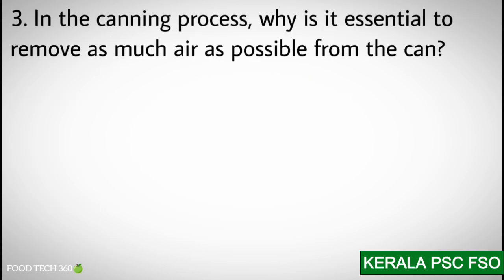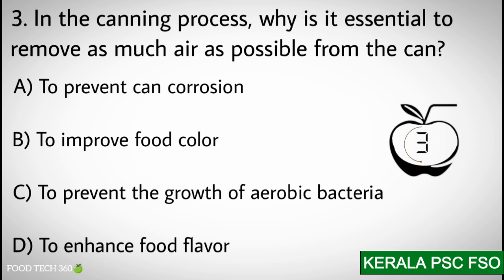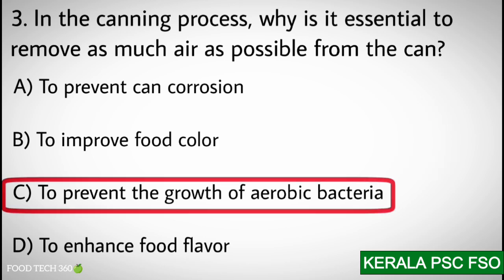Q3. In the canning process, why is it essential to remove as much air as possible from the can? Options: A) To prevent can corrosion, B) To improve the food color, C) To prevent the growth of aerobic bacteria, D) To enhance the food flavor. Correct answer: C) To prevent the growth of aerobic bacteria.